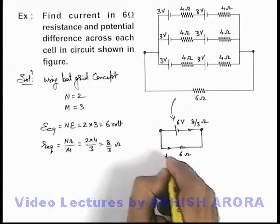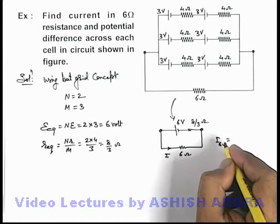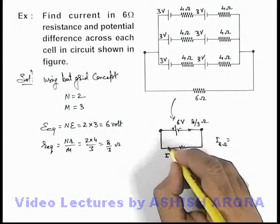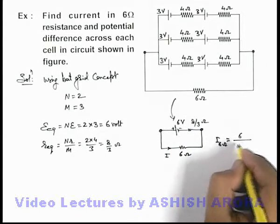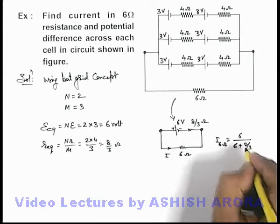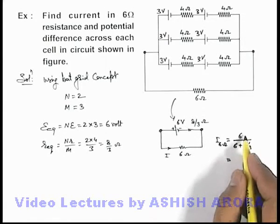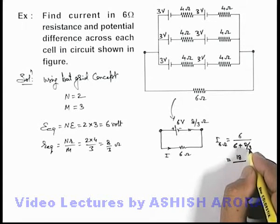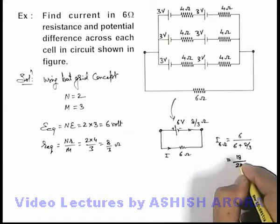Now the current flowing through the 6 ohm resistance can be directly calculated. As this is 6 volt EMF connected across 6 and 8 by 3 in series, so this can be written as 6 upon 6 plus 8 by 3. On simplifying here you get 6 multiplied by 3, it'll be 18 divided by 18 plus 8, that'll be 26.